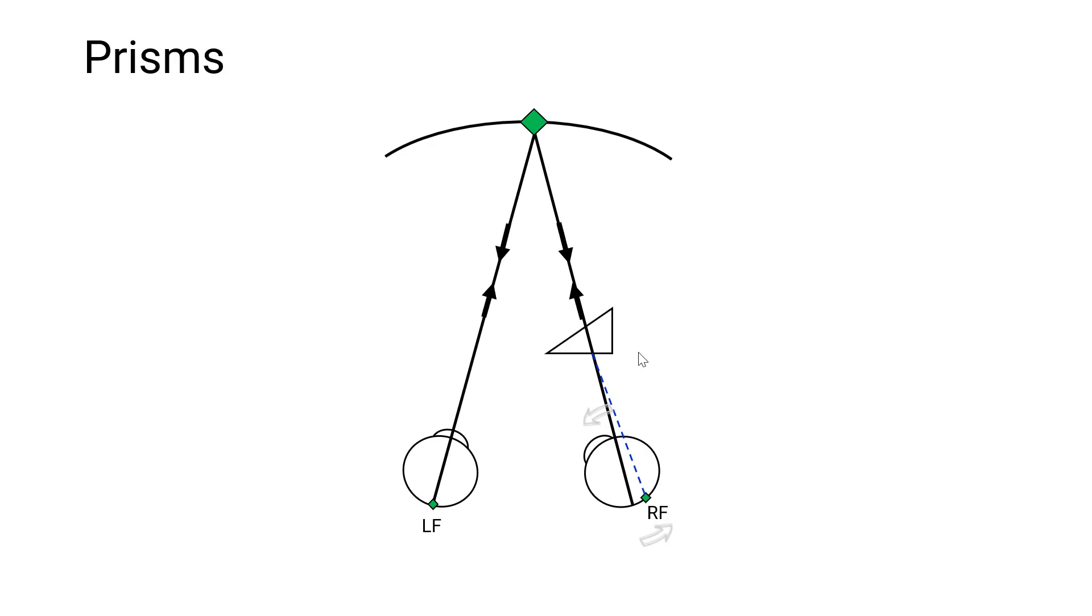Now, when we go over the prism reflex test, we'll see that other movements occur of the left eye. But let's just stay with this concept that a base-out prism will lead to the image shifting onto temporal retina, and to overcome this, an inward movement of the eye is required, which is fusional convergence.